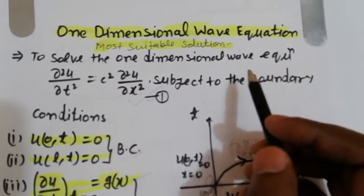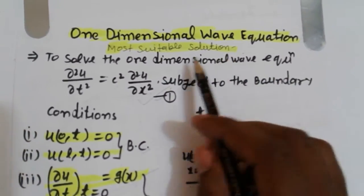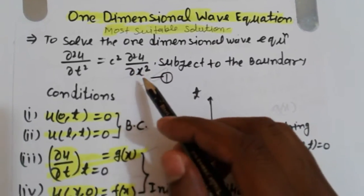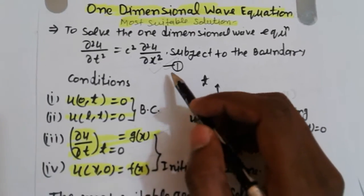One dimensional wave equations, most suitable solution. So what is the most suitable solution of wave one dimensional wave equation given boundary conditions?